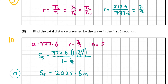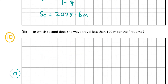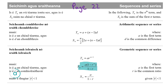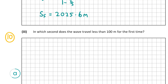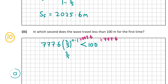Now part a3 is also worth 10 marks. It asks: in which second does the wave travel less than 100 meters for the first time? We need to write a formula for the general term, found on page 22: t_n = a × r^(n-1). We set up the inequality: 777.6 × (2/3)^(n-1) < 100. Dividing both sides by 777.6 gives (2/3)^(n-1) < 100 over 777.6. The variable is in the exponent, so we need to use logarithms.